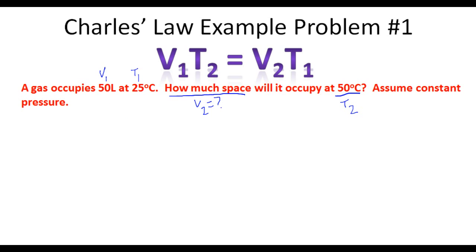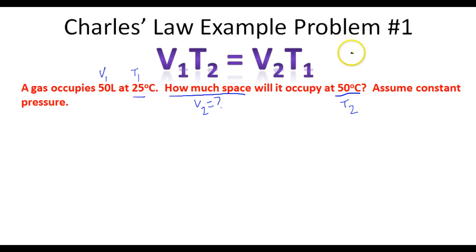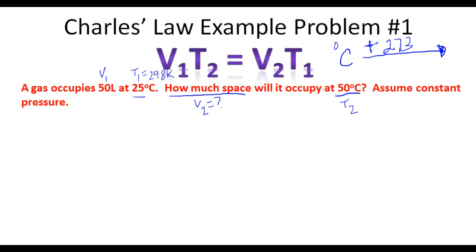At first sight you might say this is easy — the temperature is going from 25 to 50 degrees Celsius, it's doubling, so the volume must double and the answer is 100 liters. That's not the case. Whenever we work with Charles' Law, we must convert Celsius temperatures to Kelvin. To convert degrees Celsius to Kelvin, we take the degrees Celsius and add 273 to it. So 25 degrees Celsius becomes 298 K, and 50 degrees Celsius becomes 323 K.